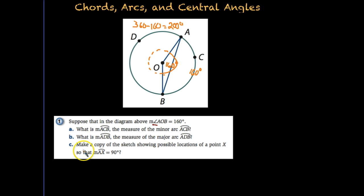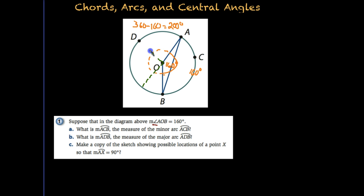In part C, make a copy of the sketch showing possible locations of a point X so that the measure of arc AX is 90 degrees. Here's A, and we want to make a mark X somewhere from A so that we have an arc measure of 90 degrees. Remember that a diameter breaks the circle into 180 degrees. If we break that in half again, X could potentially be here where the D is, or X could be on the other side. So either diagram would work.